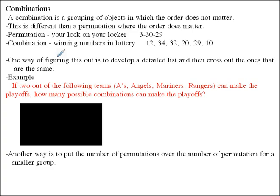So now a combination is like winning numbers in the lottery. If you have chosen these 6 numbers, and these 6 numbers are the winning numbers in the lottery, it does not matter which one you choose first. You can put them in any order, so 12, 34, 32, 20, 29, and 10. It doesn't matter. It just matters that you chose those numbers. If you have, then you win.